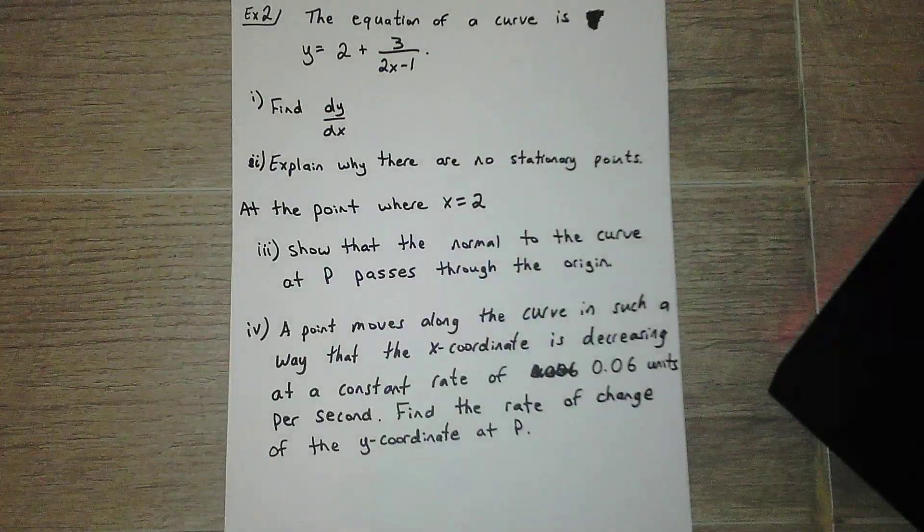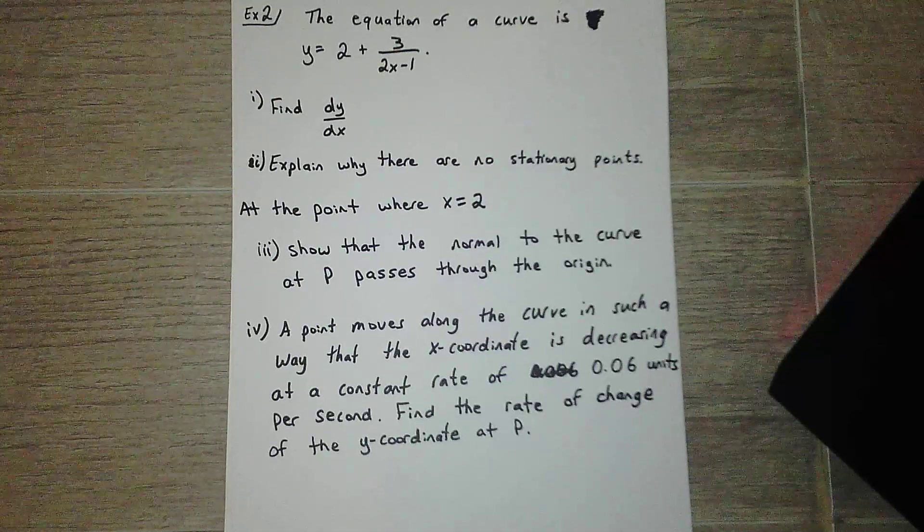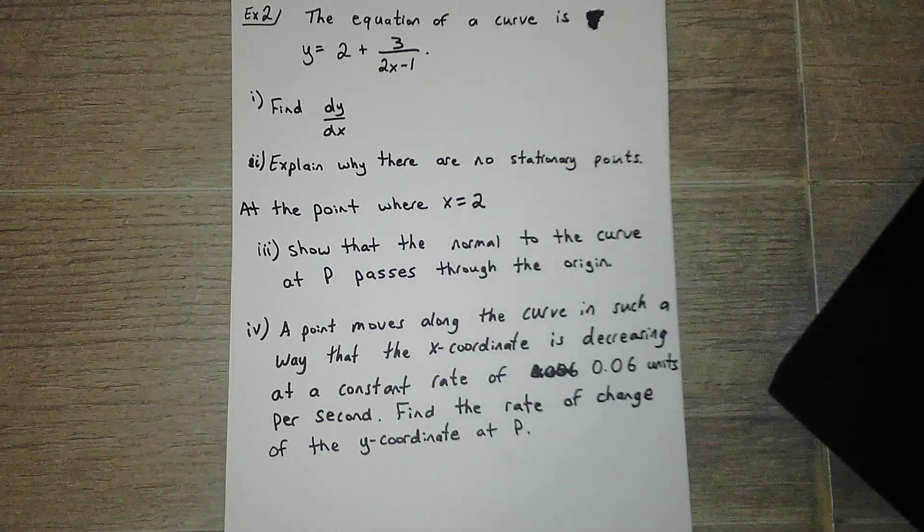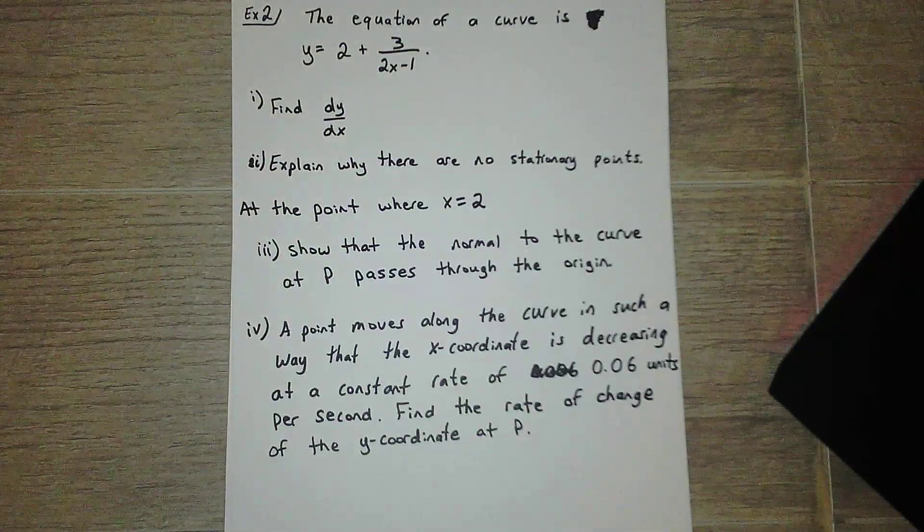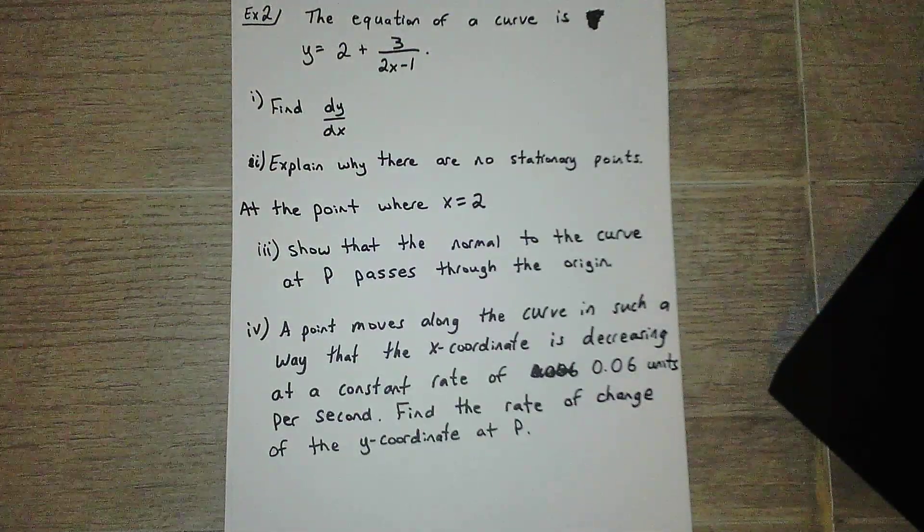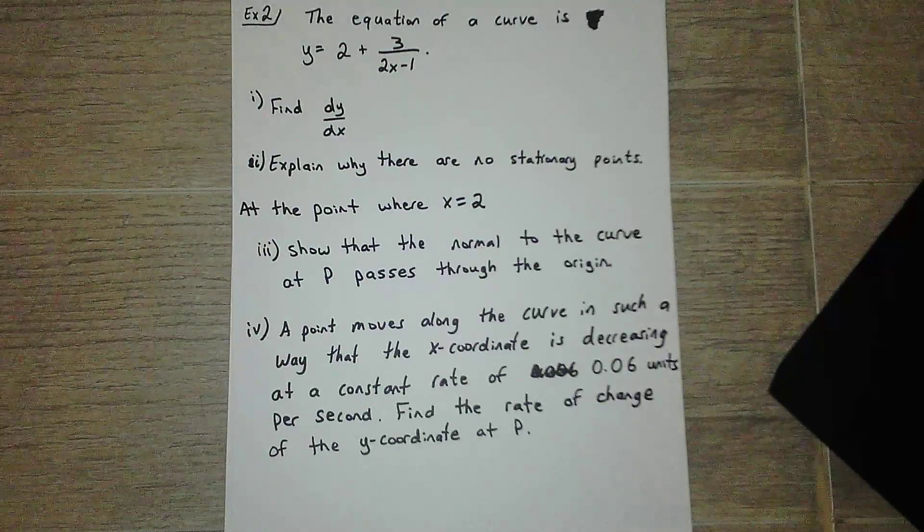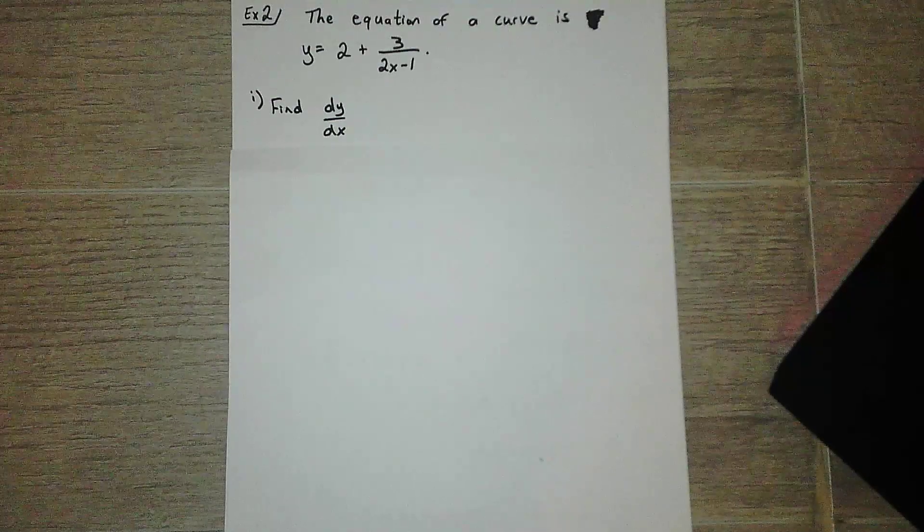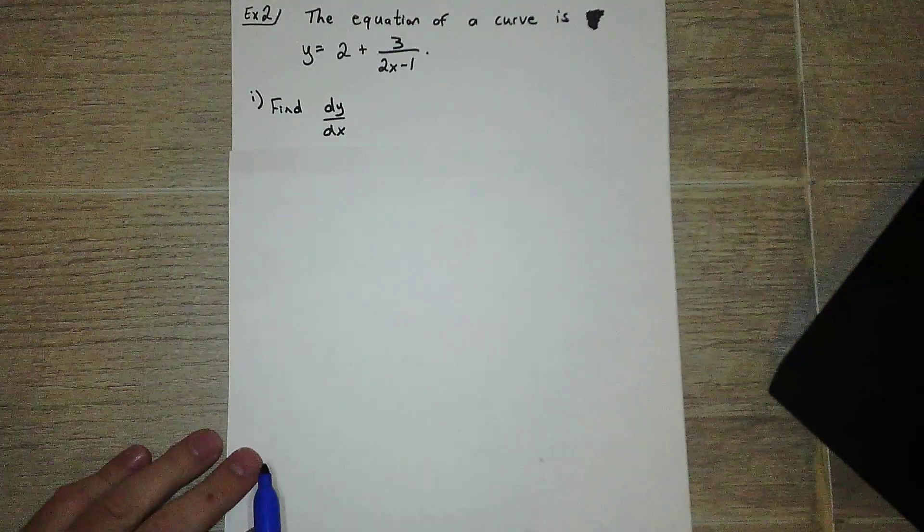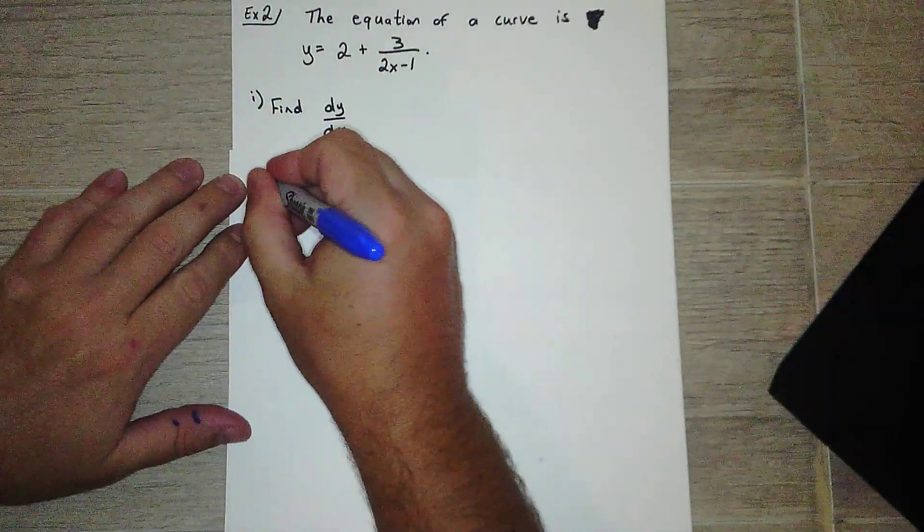Okay, so here's our question. It would probably be best for you to go ahead and pause it and try to work through this on your own, and then go through it with me if you have any questions or just want to check your answers. So we have an equation of a curve: y equals 2 plus 3 over 2x minus 1. Part i: Find the derivative.